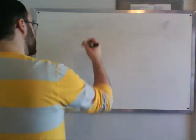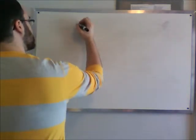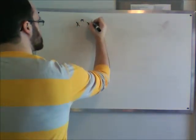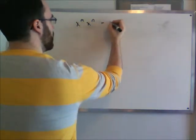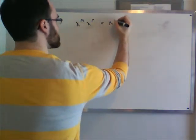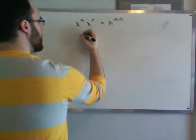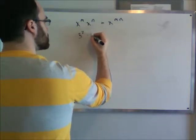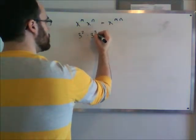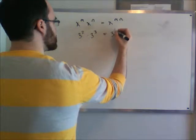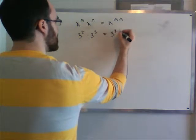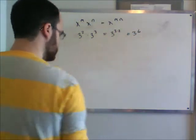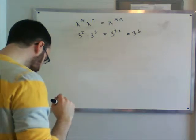Exponents we'll talk about first. Let's say you have x to the m times x to the n — that equals x to the mn. So if you have 3 squared times 3 cubed, it equals 3 to the 3 times 2, which equals 3 to the 6. That's the first law of exponents.